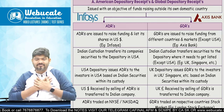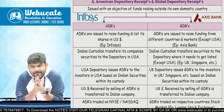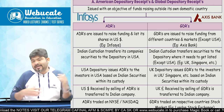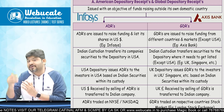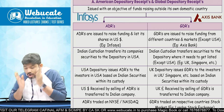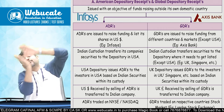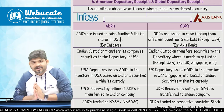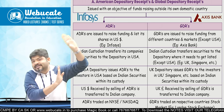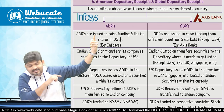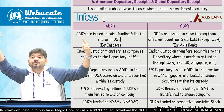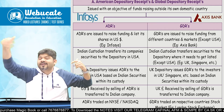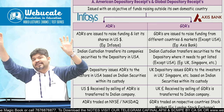Suppose Infosys has already done an IPO in India and now it wants more money. It has two options: either go for an FPO or rights issue within the country, or it can issue shares outside India — say in the United States of America or any other country. If it issues shares in the United States, it will be called American Depository Receipts (ADR). If issued in other countries like London or Europe, it will be called GDR — Global Depository Receipts. Anywhere other than USA, it will be a GDR.